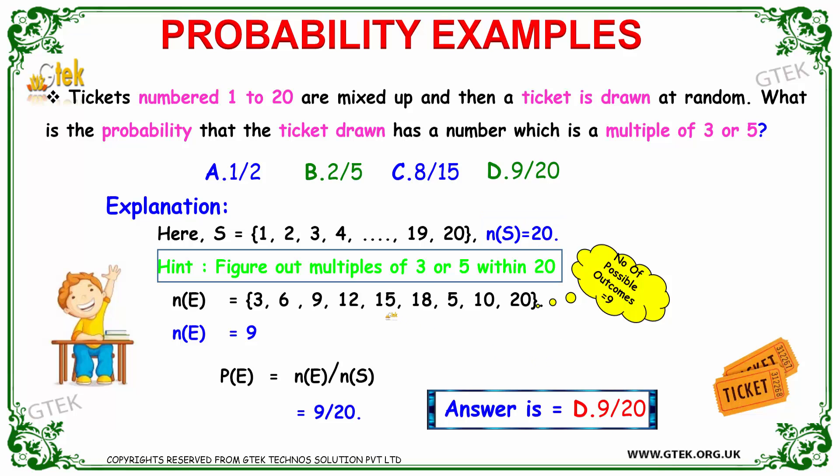The ticket numbers are 1 to 20, so the sample space is 20. For multiples of 3: 3, 6, 9, 12, 15, and 18. For multiples of 5: 5, 10, 15 is already there, and 20. The number of possible outcomes is 9. So the probability is 9 divided by 20. That's the answer.